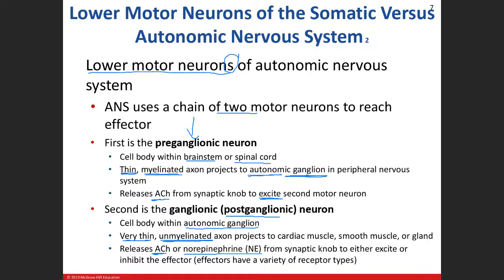One neurotransmitter is excitatory and the other is inhibitory — which is important because we need to turn effectors on and off. We need to tell the gland to stop secreting, or stop sweating, or start — depending on what type of neurotransmitter is being released. That's why we have different receptors on the postganglionic neuron to determine what type of response we're going to have.